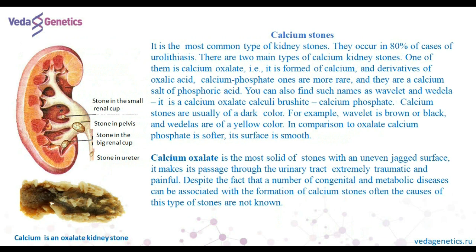Calcium stones are the most common type of kidney stones. There are two main types: calcium oxalate, formed of calcium and derivatives of oxalic acid, and calcium phosphate, which is more rare and is a calcium salt of phosphoric acid. Calcium oxalate is the most solid of stones with an uneven surface, making its passage through the urinary tract extremely traumatic and painful. Despite the fact that a number of congenital and metabolic diseases can be associated with calcium stones, often the causes are not known.